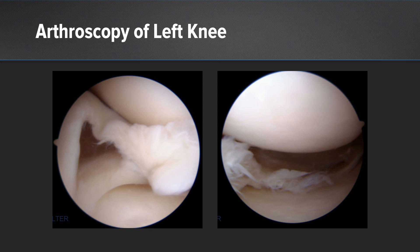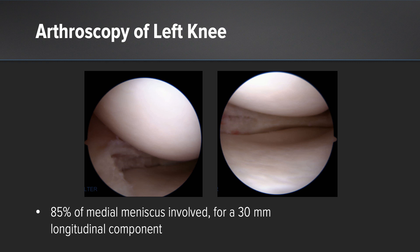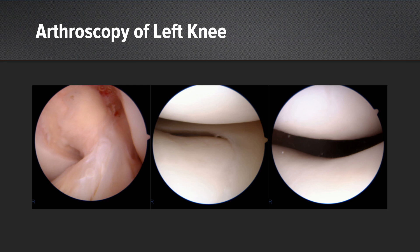But the tear was very complex, as you can see here — complex, multidirectional tearing. In fact, about 85% of the meniscus was involved with this tear. Here's some of the imaging after I removed the grossly non-functional tissue. You can see the articular surfaces of the medial femoral condyle and medial tibial plateau were quite well-preserved. The rest of the knee appeared healthy.